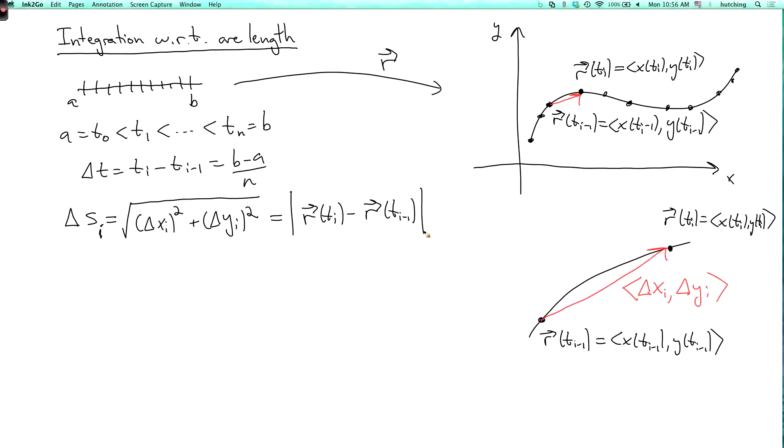Now I can define the integral. So we define the integral over c of f ds to be the limit as n goes to infinity of the sum from i equals 1 to n of f of... Well, I need a sample point here.